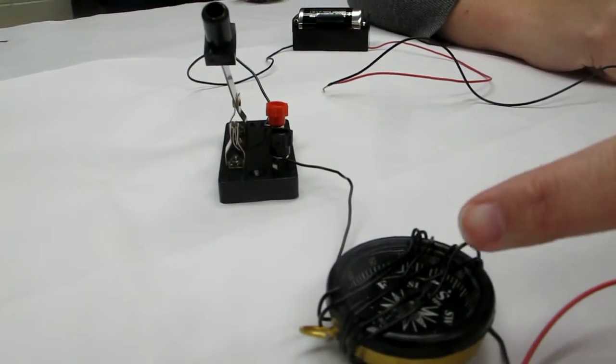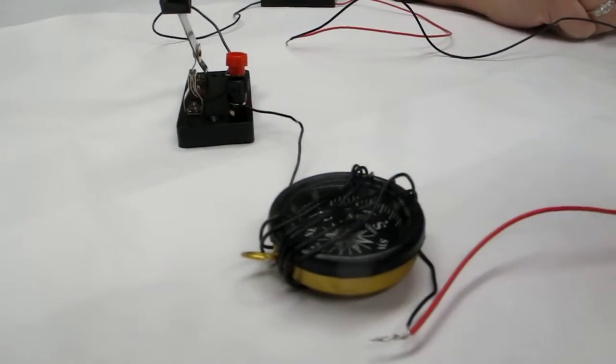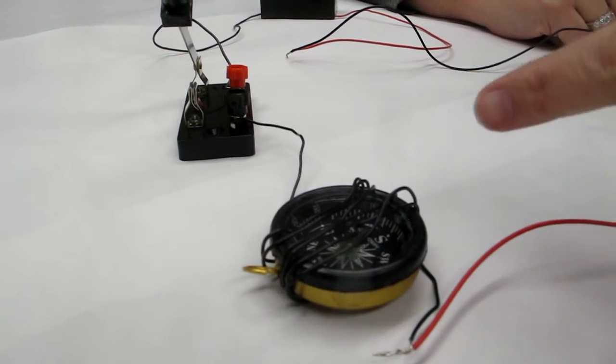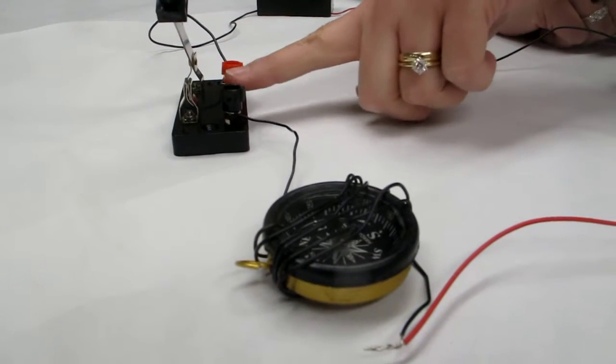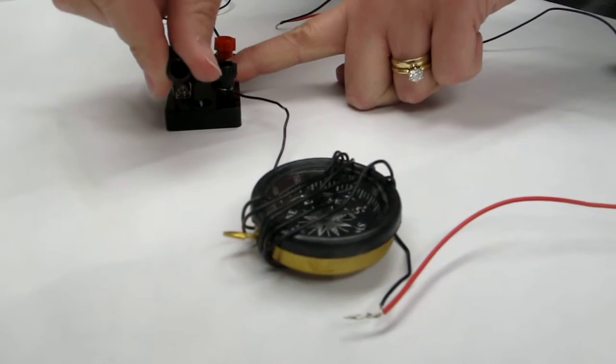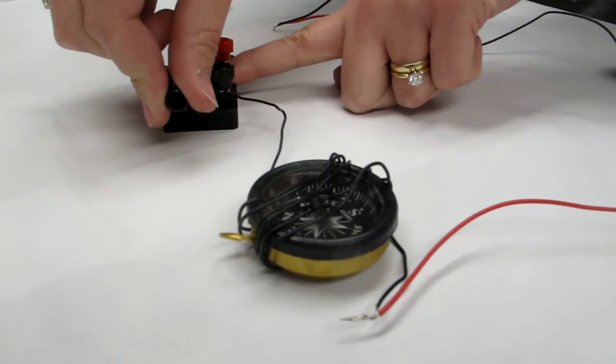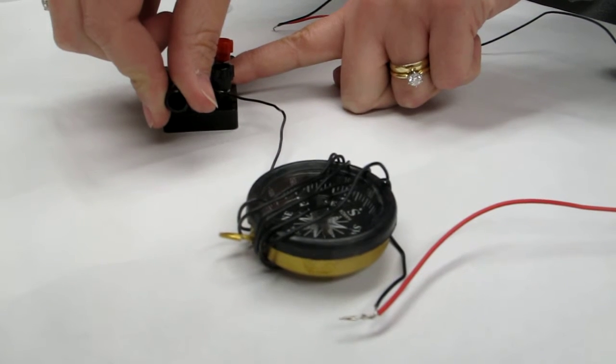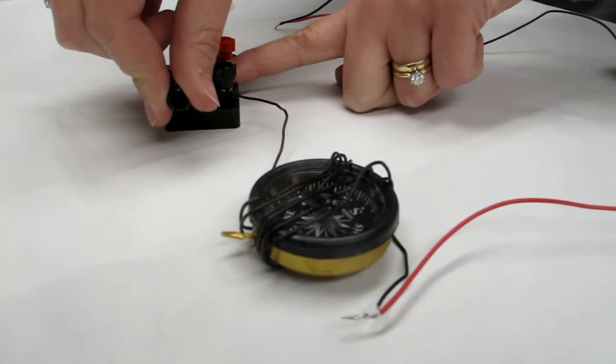Students will then let the compass needle come to rest. They'll note the position of the compass needle, and then they'll close the circuit by closing the knife switch, and they'll observe how that affects the compass needle position.